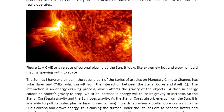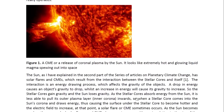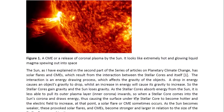The interaction is an energy drawing process which affects the gravity of the objects. A drop in energy causes an object's gravity to drop, whilst an increase in energy will cause its gravity to increase. So the stellar course gains gravity and the sun loses gravity.